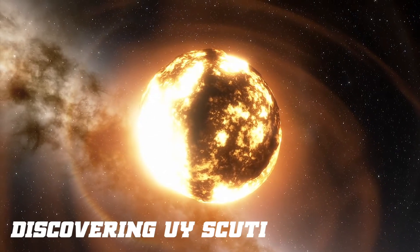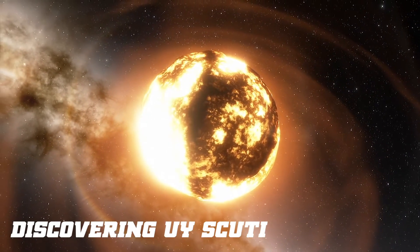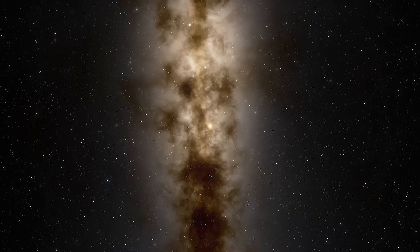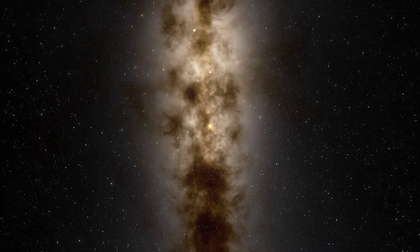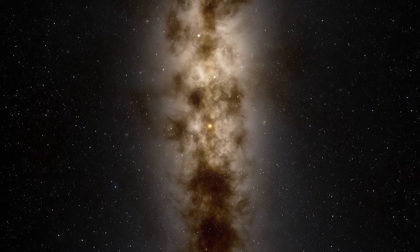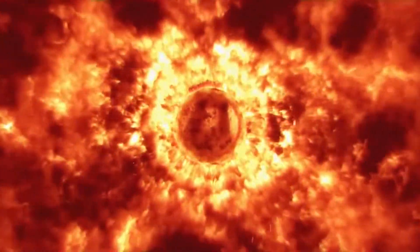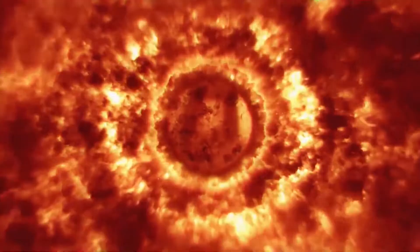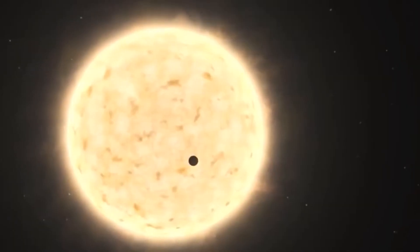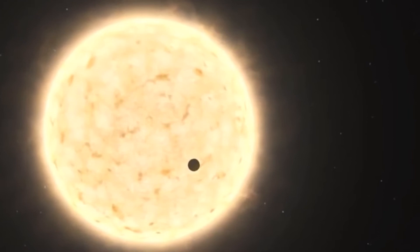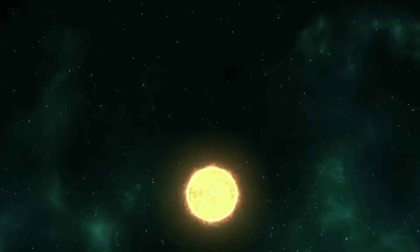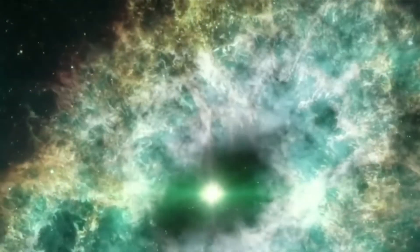Discovering UY Scuti. The dimensions of UY Scuti, the largest known star in the universe, are truly mind-boggling. This red supergiant star has an estimated radius that exceeds the orbit of Saturn, making it one of the most enormous stars ever discovered. While precise measurements are challenging due to its distance and the interstellar dust that can obscure observations, estimates suggest the following dimensions for UY Scuti.